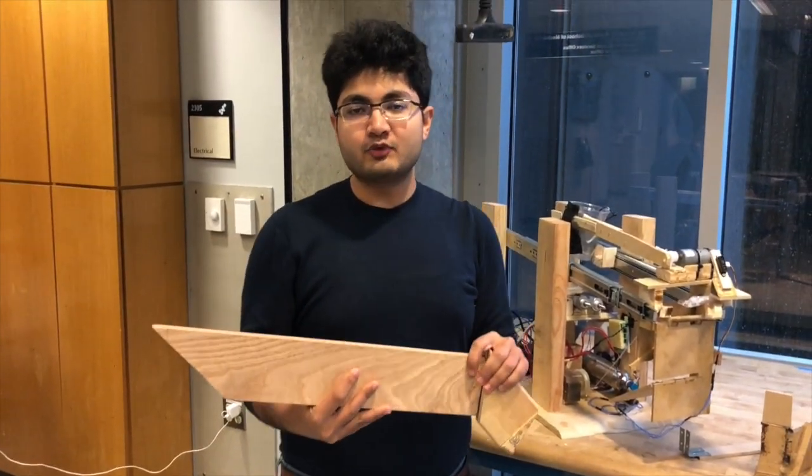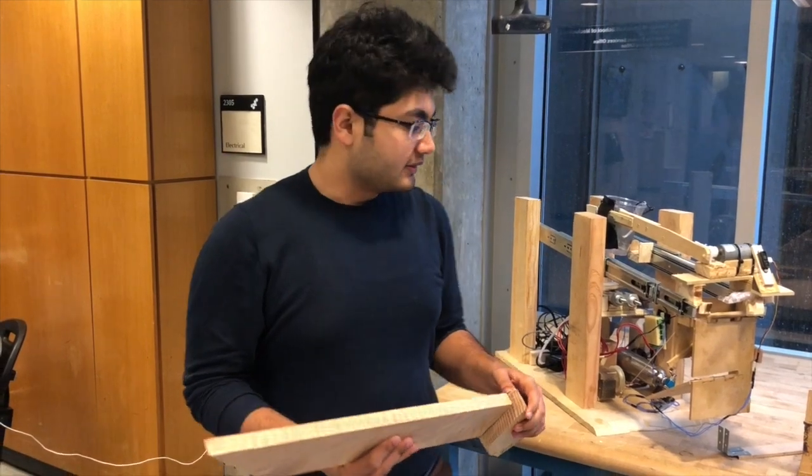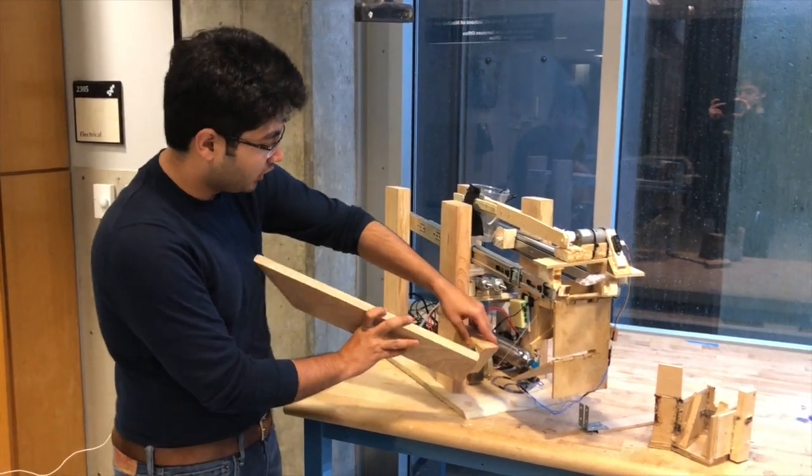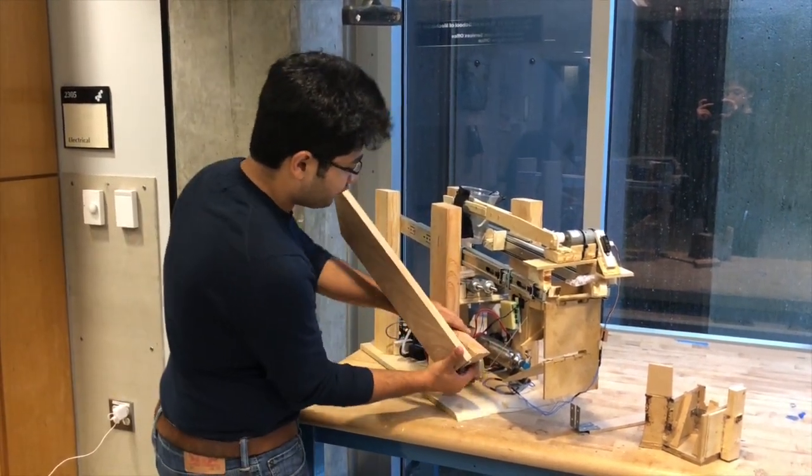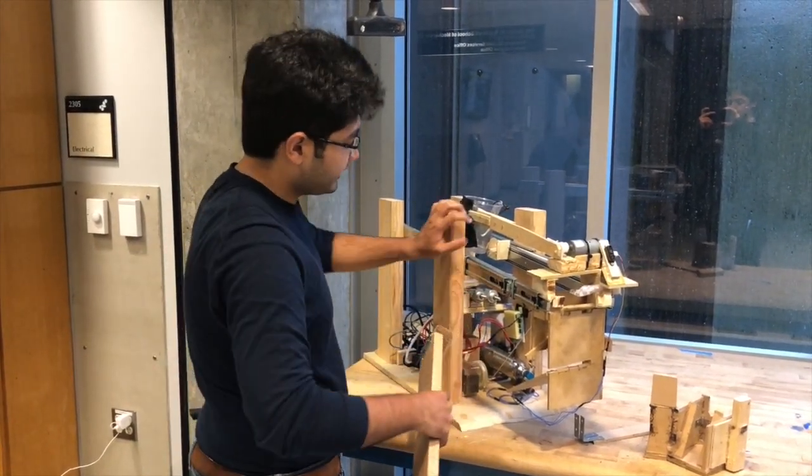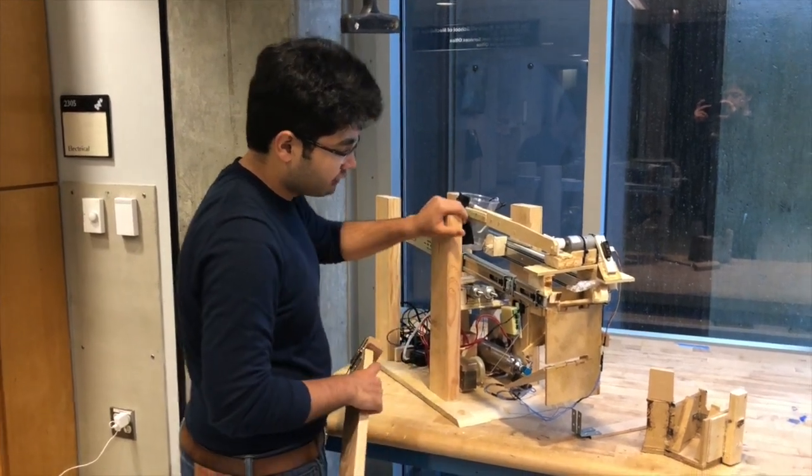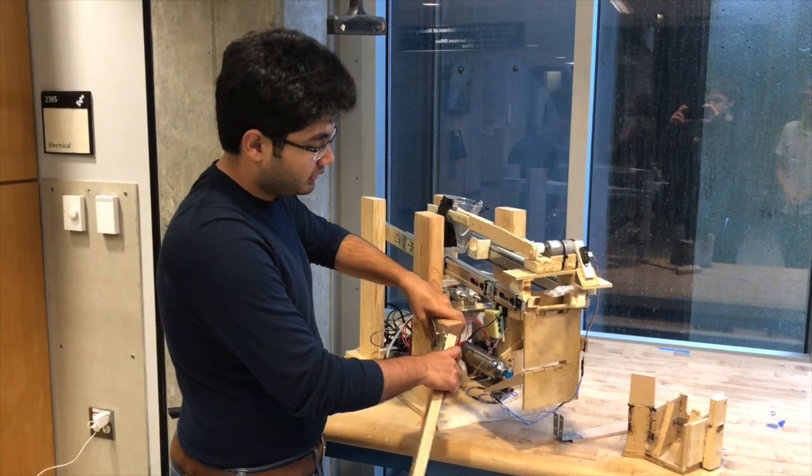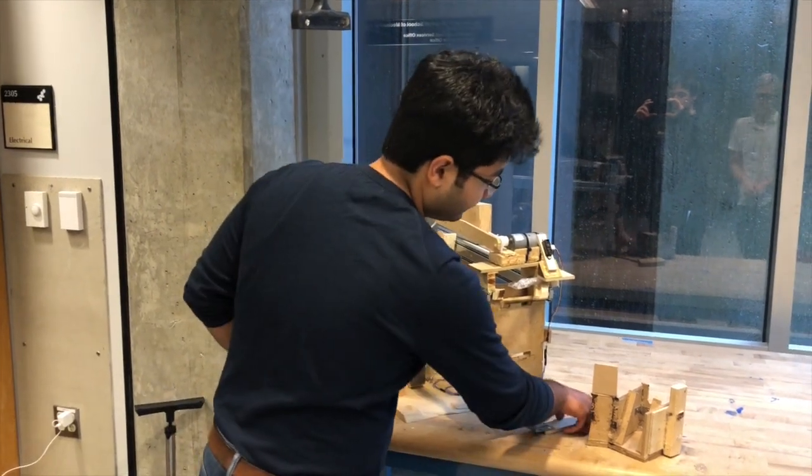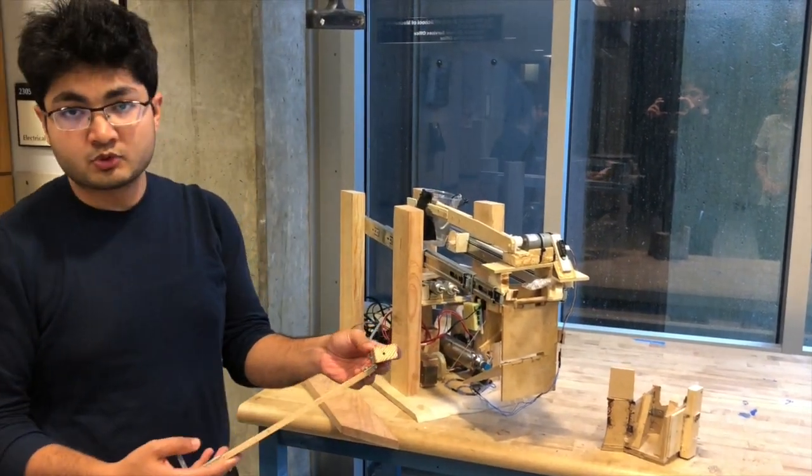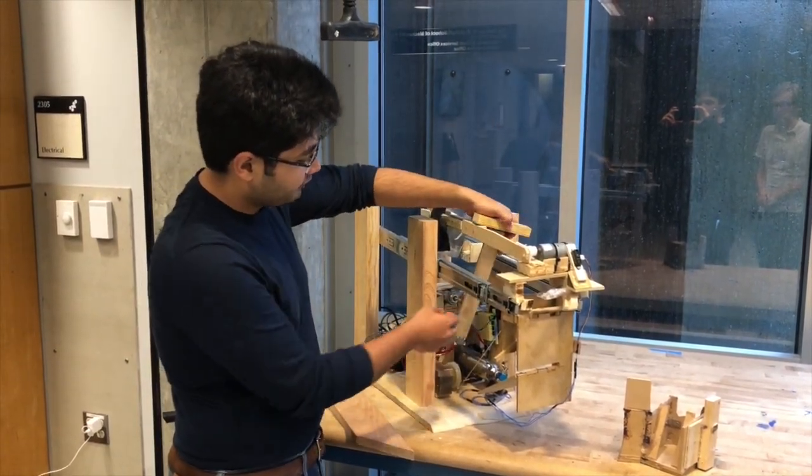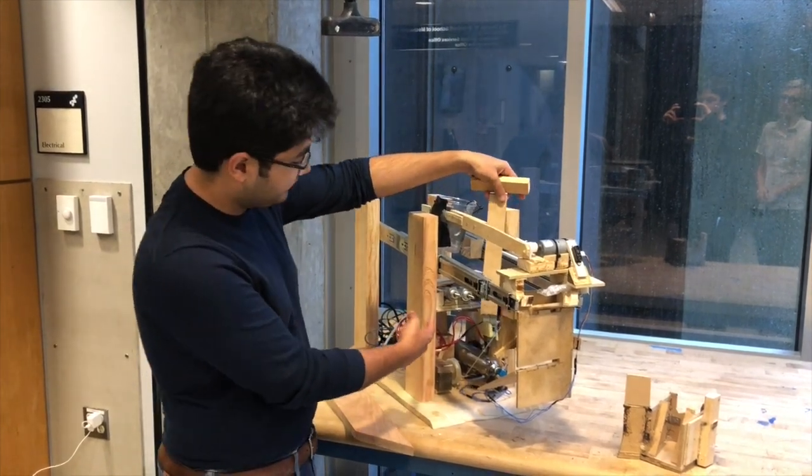So, this is an arm we made to expel the Dementor. The problems we faced with this arm were the orientation. Once we placed it on the pillar, it conflicted with the end effector. So, once we launched the arm, it shook the whole structure, and the structure would pivot, and it would also kind of hit the end effector, which caused problems. To overcome this problem, we designed another arm to expel the Dementor, which is this. And the problem with this arm was that it would conflict with the wires and interfere with other components of the machine.